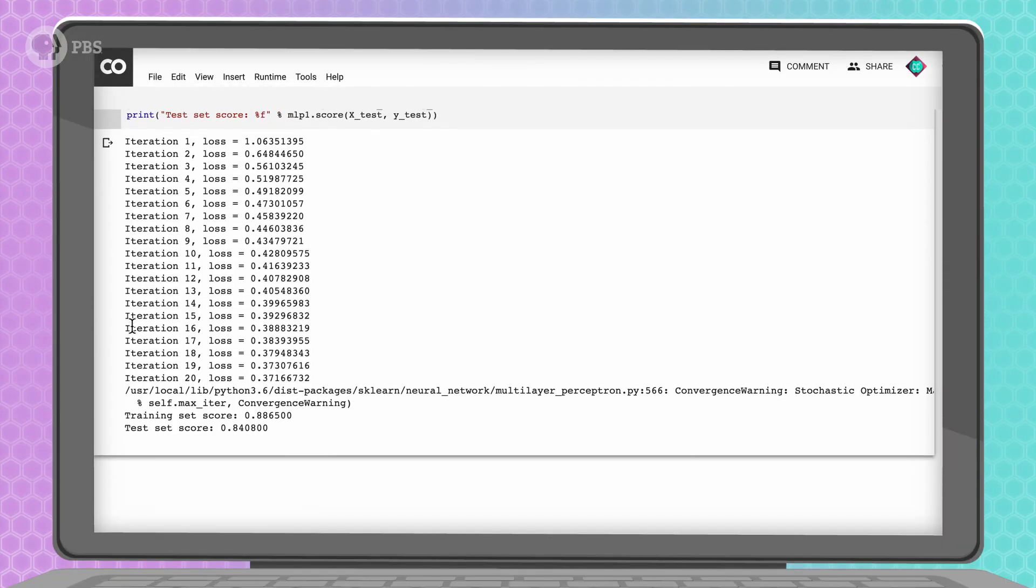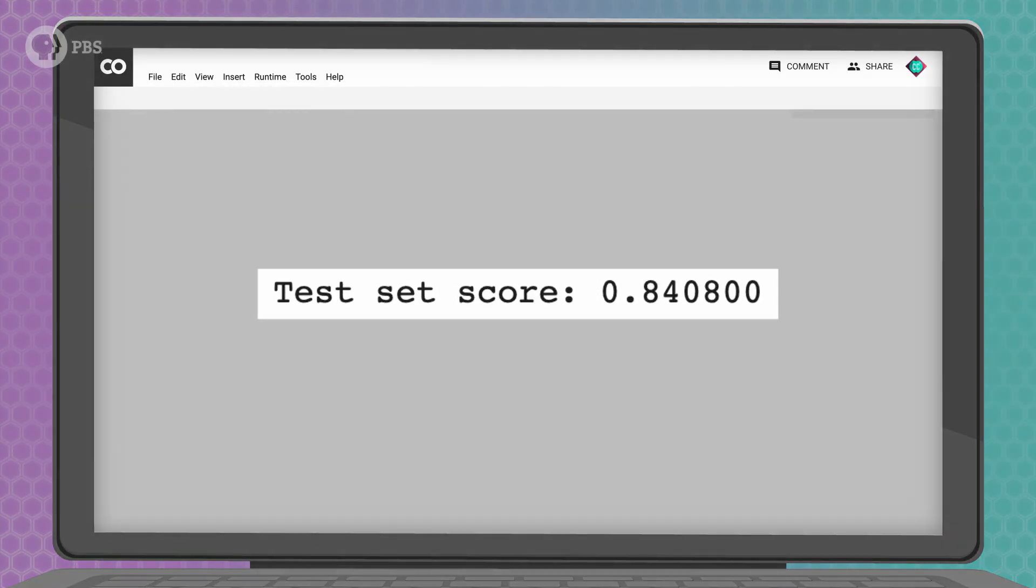The number that we really care about is how well the network does on the testing dataset, which shows how good our network is at dealing with data it's never seen before. And, we have 84% correct! Now, that's not bad, considering we only trained for 20 epochs. But, we still want to improve it.